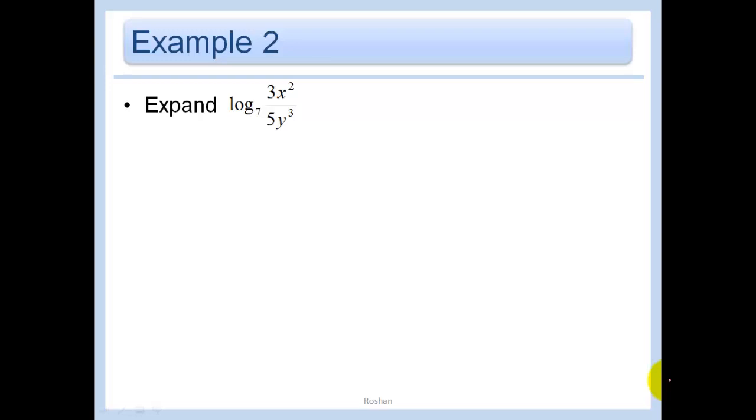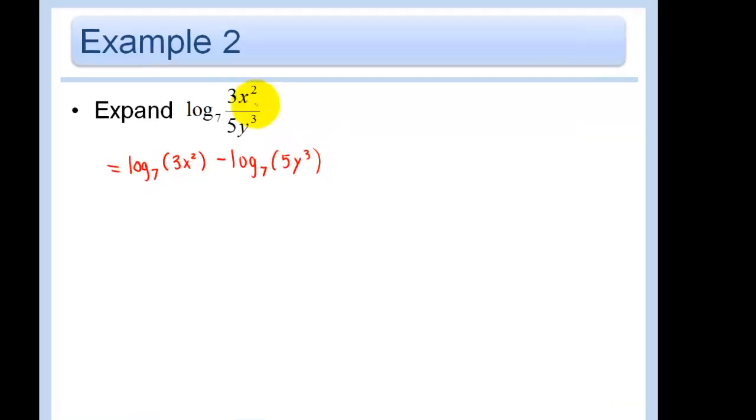this problem is asking us to expand log base 7 of 3x squared over 5y cubed so let's just use all of the properties that we've just learned let's first use the quotient so we do log base 7 of 3x squared minus log base 7 of 5y cubed